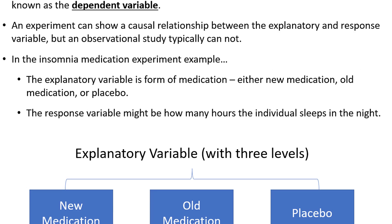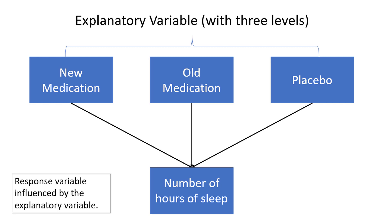Here is a visual representation of the insomnia study variables. The explanatory variable is the type of medication — either new, old, or placebo — and the response variable, which we believe to be influenced by the explanatory variable, is the number of hours of sleep the individual gets in a night.